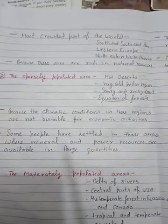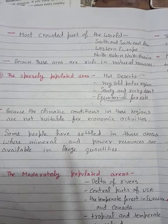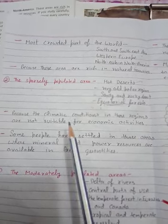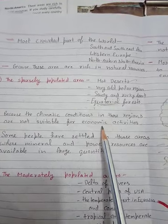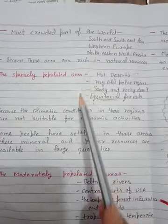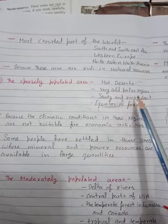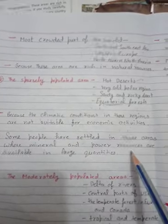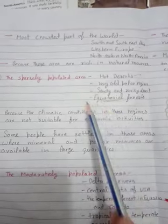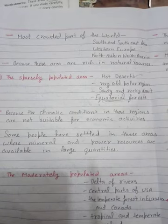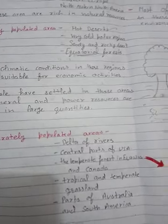Sparsely populated areas — hot deserts, very cold or polar regions, sandy and rocky deserts, or equatorial forests — have sparse population because the climate conditions in those regions are not suitable for economic activity. Some people have settled in those areas, so it is not that there is absolutely no population, but it is very low. Now, the third point: moderately populated areas.